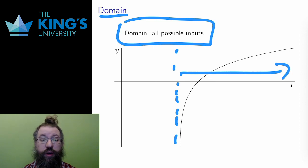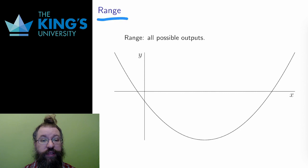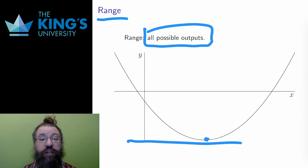The range of a function is all possible outputs. It's the mirror of domain. Domain is input, range is output. In the figure, I've drawn a quadratic where the lowest point is y equals negative 4, so the range here is all numbers larger than or equal to negative 4.